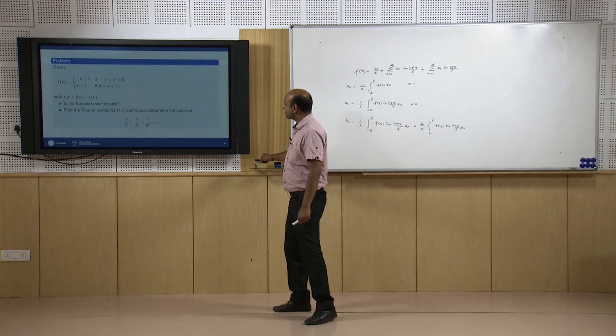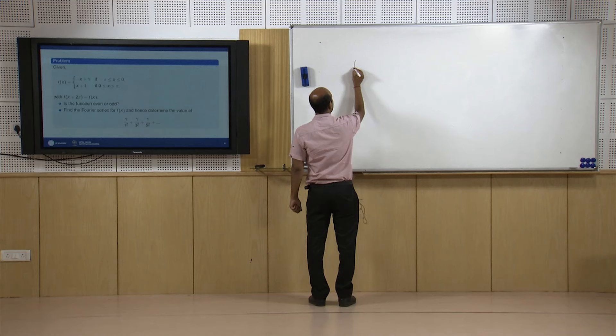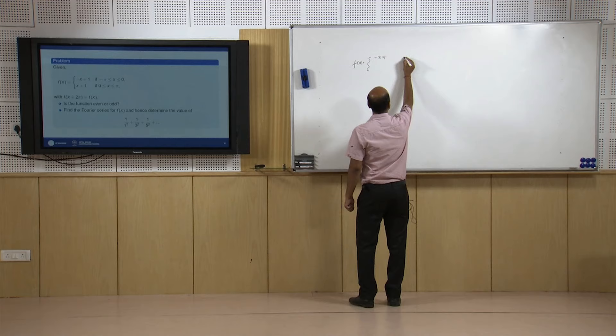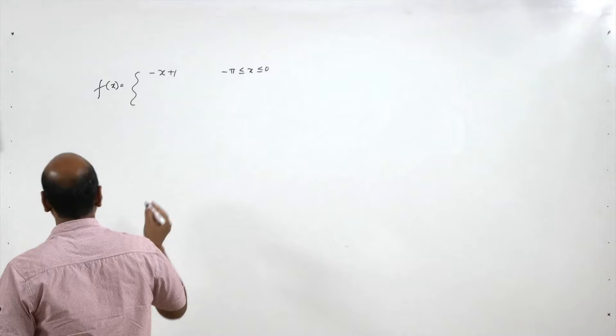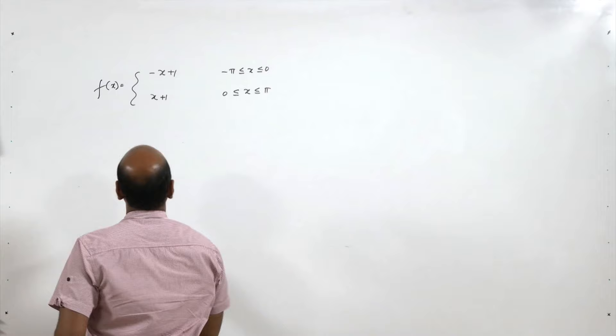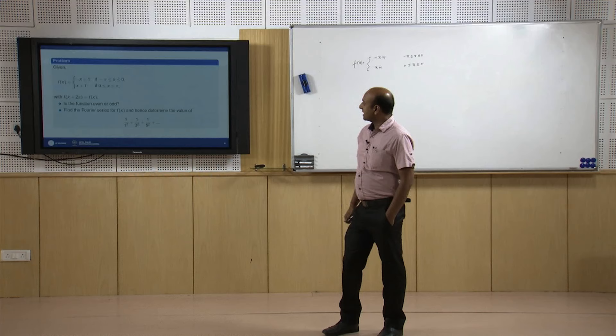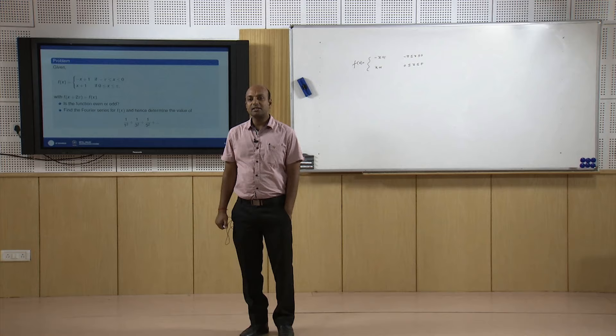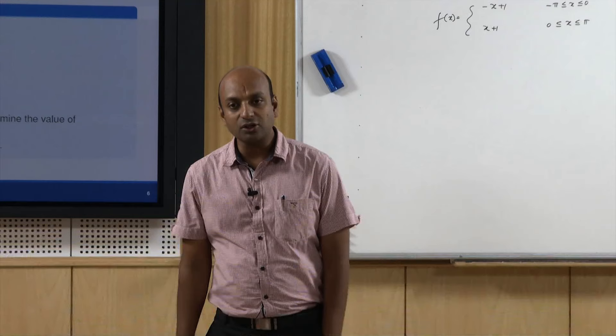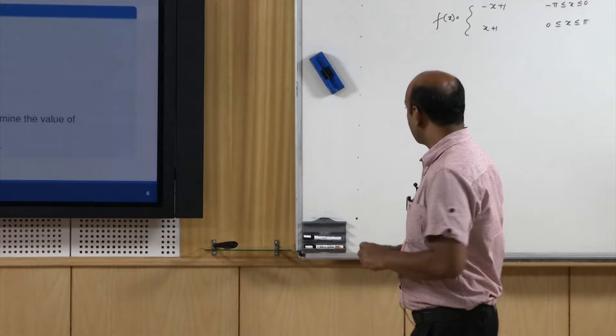Let us solve a few examples. The function is: f(x) = -x + 1 for -π ≤ x ≤ 0, and f(x) = x + 1 for 0 ≤ x ≤ π, with period 2π. First we check whether the function is even or odd by finding f(-x). If f(-x) = f(x) it is even; if f(-x) = -f(x) it is odd.